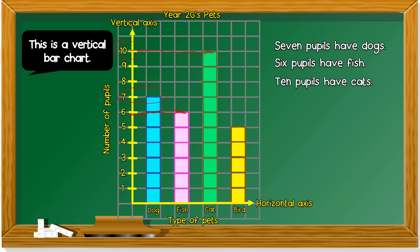Last one, bird. The highest one here. Move to the side. You get? Five. So five pupils have birds. Five pupils have birds.